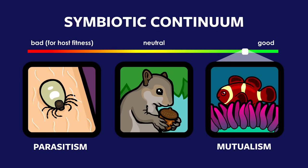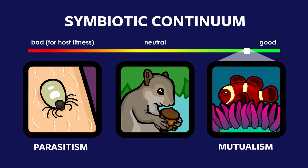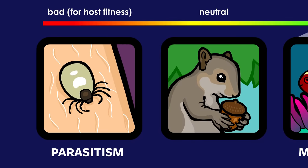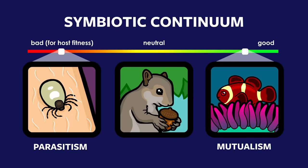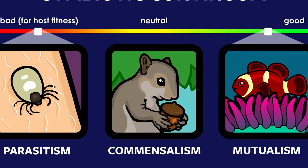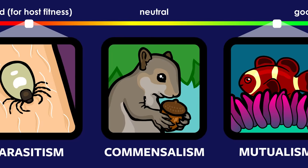Parasitic symbiosis, or parasitism, is when one organism benefits while the other is harmed. They drink your blood and then sometimes repay you with Lyme disease. Total jerks. Commensalistic symbiosis, or commensalism, is when one organism benefits while the other is not dramatically helped or harmed.